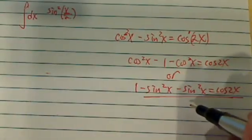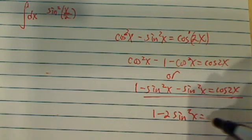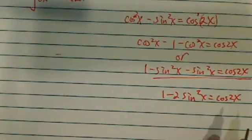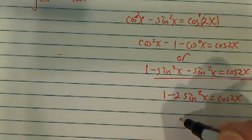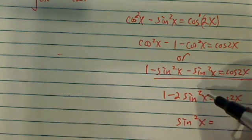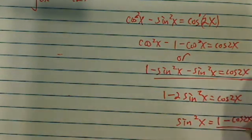This is the one we're going to be using: 1 minus 2 sine squared x equals cosine of 2x. From there, you can see that sine squared x equals 1 minus cosine of 2x divided by 2.